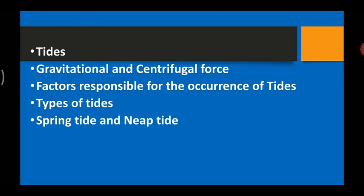We learned the factors responsible for the occurrence of tides: the gravitational pull of the sun, the moon, and the earth. Then we learned the types of tides — spring tides and neap tides. Spring tides occur on new moon and full moon days when the gravitational pull of the sun and moon act in the same direction. Neap tides happen on the first and third quarter of the moon, when the forces of the sun and moon operate at right angles to the earth.